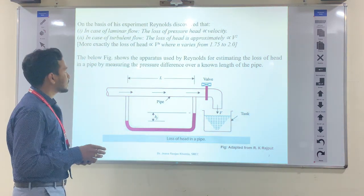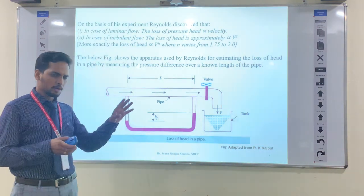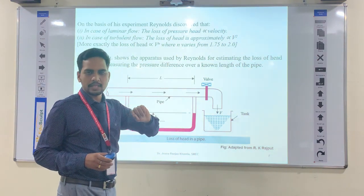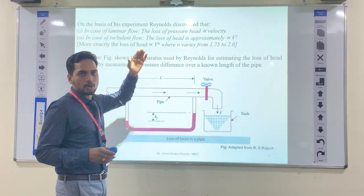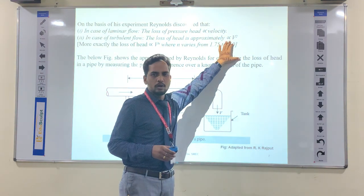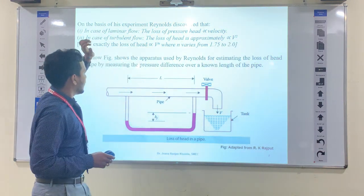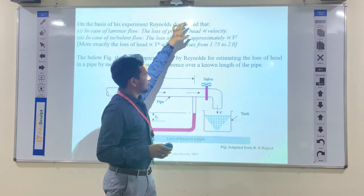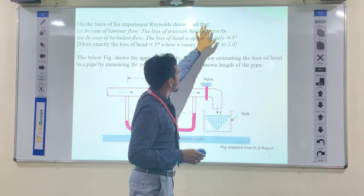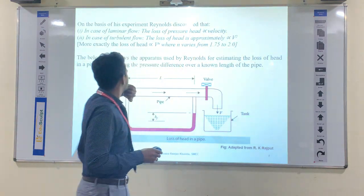On the basis of this experiment, Reynolds discovered a formula and statement: in case of laminar flow, the loss of pressure head is proportional to the velocity. But in case of turbulent flow, the pressure head loss is proportional to the square of velocity, V². This is the main key point of the Reynolds experiment.